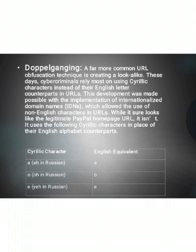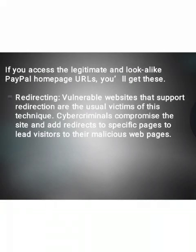While it sure looks like the legitimate PayPal homepage URL, it isn't. It uses the following Cyrillic characters in place of their English alphabet counterparts. Cyrillic 'Е' in Russian — their English equivalent is E. 'О' in Russian — their English equivalent is O. 'Ye' in Russian — their English equivalent is E. If you access the legitimate and look-alike PayPal homepage URLs, you will get this.